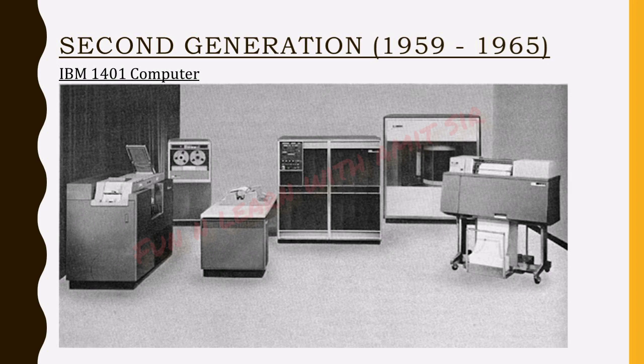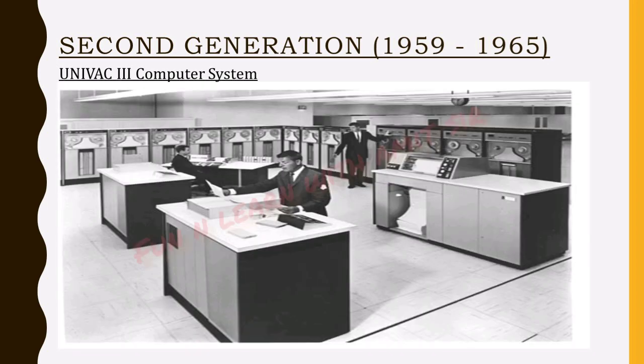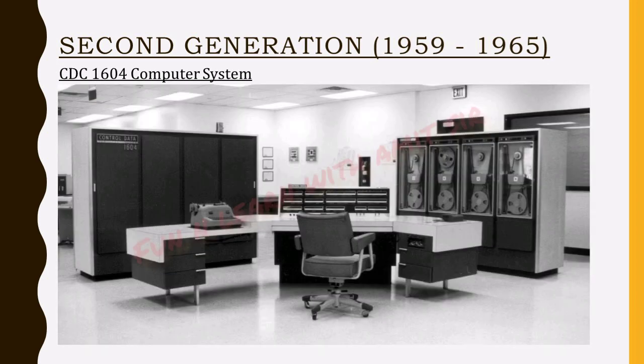In this figure you can see the IBM 1401, which is from the IBM 1400 series. This image shows UNIVAC 3, also a second generation computer. The next is the CDC 1604. You can see the sizes of these computers — how they were used, but still smaller than first generation computers.